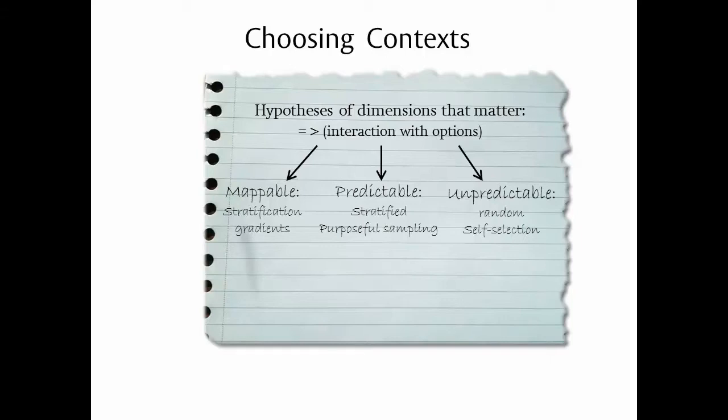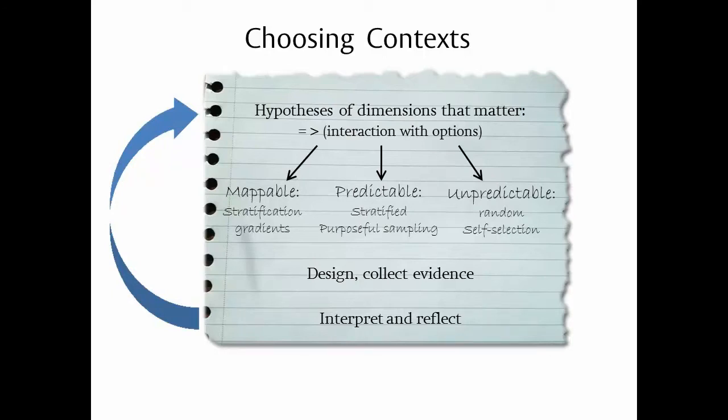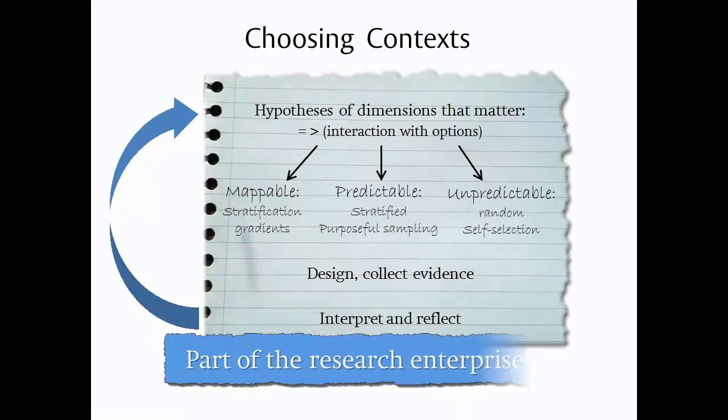Once we have chosen those contexts to work in, we will design the study, collect the data, interpret it, and reflect, and perhaps go back and refine the hypothesis and repeat the cycle. The important point is that this process of choosing contexts to work in—the location, the people, the socioeconomic and ecological niches that they represent—this is part of the research enterprise. And it should be driven by the requirements of the research, whatever one of those study types we're using.